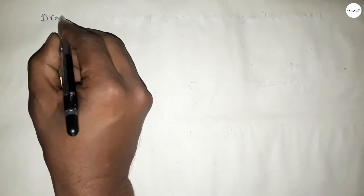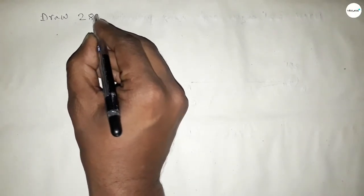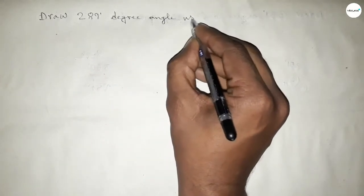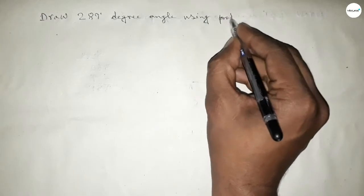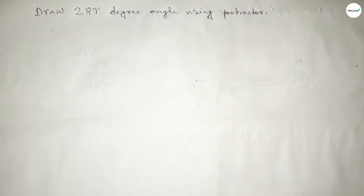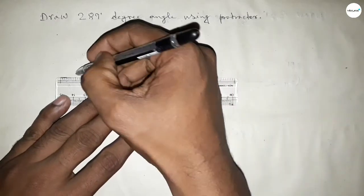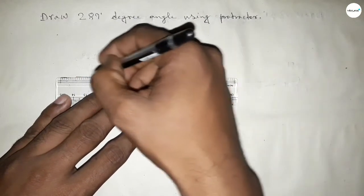Hi everyone, welcome to SI Share Classes. Today in this video we have to draw a 289 degree angle by using a protractor. So let's start the video. First of all, we have to draw here a straight line of any length.